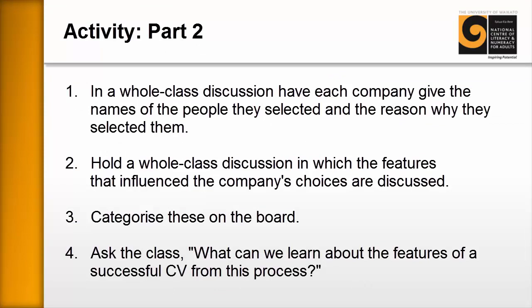Activity part two. In a whole class discussion, you then have each company give the names of the people they selected and have them explain why they selected them, working around the class. You want to engineer a whole class discussion in which the features that influenced the company's choices are discussed — simply ask why they chose this person and why they didn't choose another, creating a debate within the class. You will find that all the groups will probably select slightly different people. As the learners are discussing skills and the things that helped them select people, write these up on the board and try to categorize them.